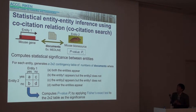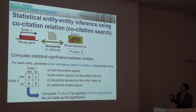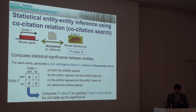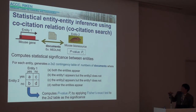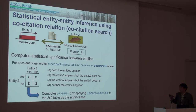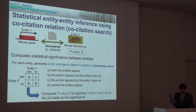The second statistical search is entity-entity inference using co-citation relation. This relation is generated by entity-document relations. As with the direct search, GRACE generates a two-by-two contingency table in the same way and applies Fisher's exact test to compute a p-value, which is the statistical significance between these two entities.